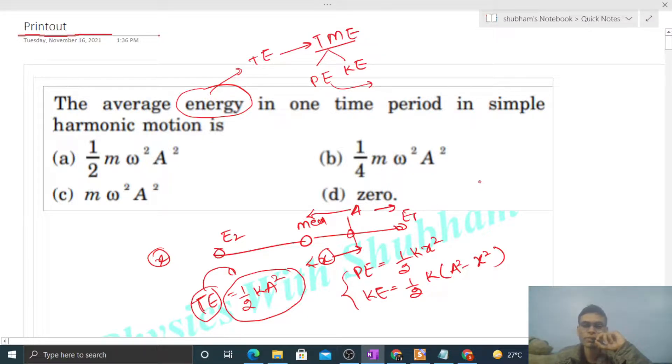That is half of k into a square. So k's value will be m into omega square, right? So you see option a is correct. So I think you have understood.